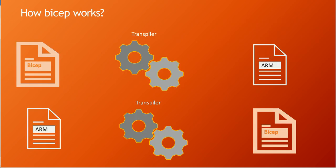Now let's see how exactly Bicep works. Bicep is a transpiler — on the left side, I create a Bicep file which is a domain-specific language with its own structure and way of writing. Once you create a Bicep file, you provide it to the transpiler, which processes it and produces an ARM template as output. In the vice versa, if you have existing resources in Azure and want a Bicep version, you can bring in those ARM templates, provide them to the Bicep transpiler, and Bicep outputs a Bicep file that you can manage in your repository.